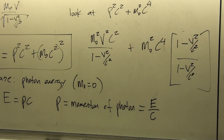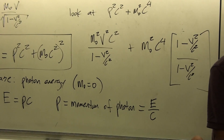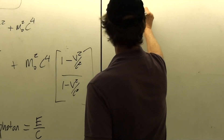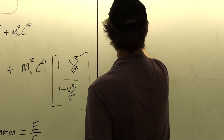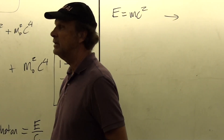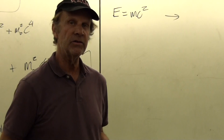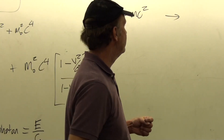Now, a couple other things regarding E equals mc squared. This is an equivalence between mass and energy. E equals mc squared is a way of stating that there is an equivalent amount of energy in any given amount of mass.